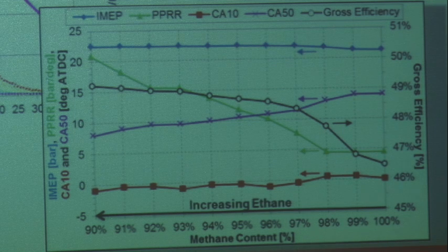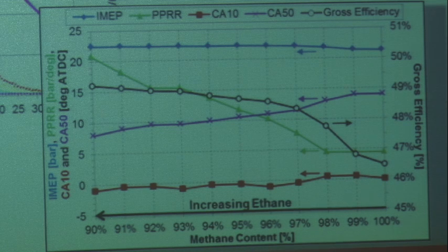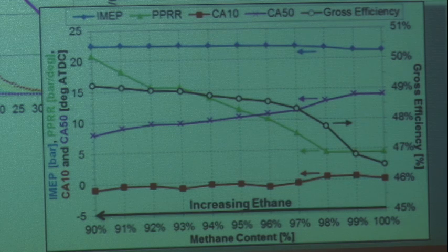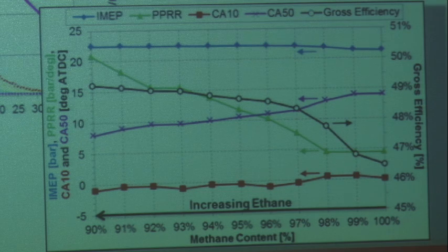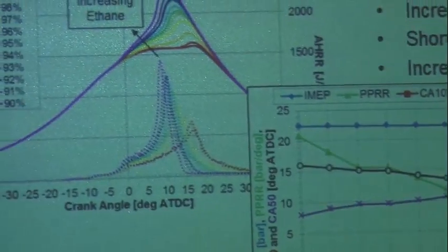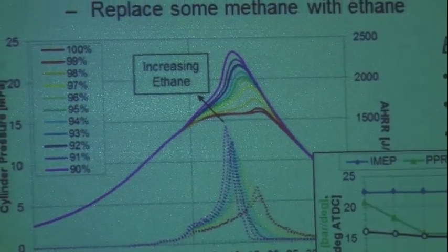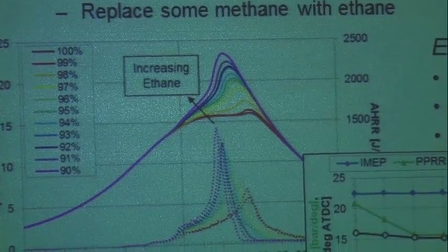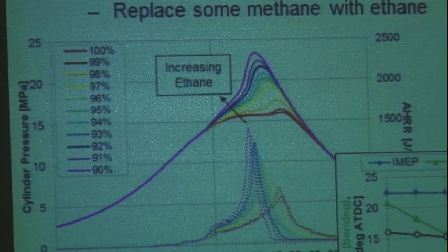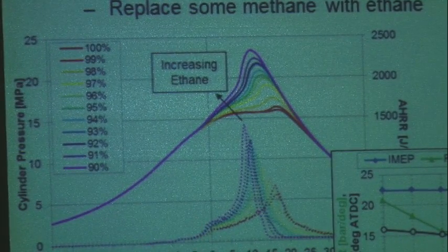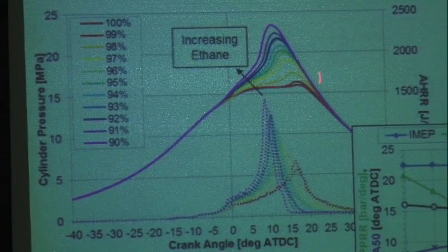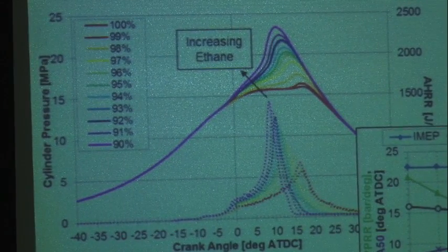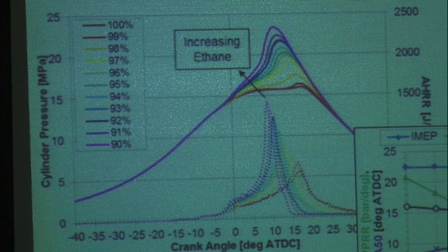If you're presenting a technology that's fuel flexible, you obviously need to know what that fuel is and how to compensate for changes. Interestingly, the red data — the CA10, or 10% burn point — doesn't care how much ethane there is. Why? The diesel is doing the ignition, so it doesn't care about the composition of the fluid. You can at least control the combustion phasing that way. The details of the pressure rise rate — the burning of the mixture of the two fuels — is what needs to be controlled.